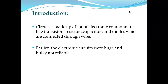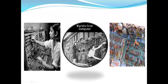Earlier the electronic circuits were huge and bulky and not reliable. This figure represents the circuits with large size and the computer with large size. Nowadays the size of electronic gadgets becomes very small — we are using laptop computers. What made the miniaturization of electronic gadgets possible is the IC or Integrated Circuit.